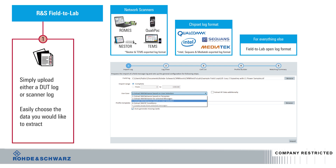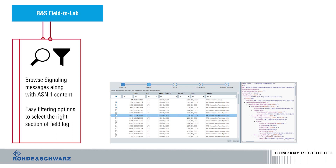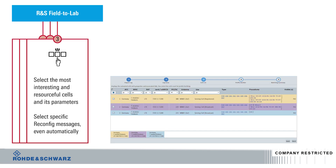Rohde & Schwarz network scanner logs and most popular chipset logs are readily read by Field to Lab. For everything else, there is an open log format template helping other log formats to be read by Field to Lab. The second step is to browse and filter the log file to remove any unwanted information.